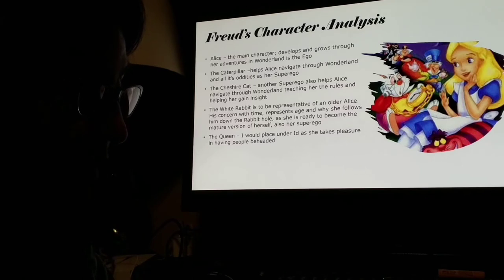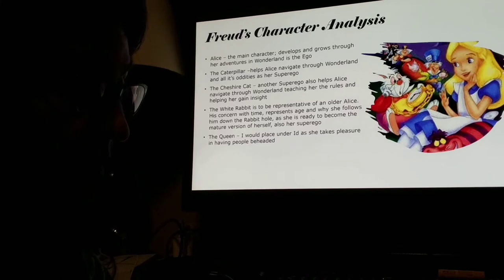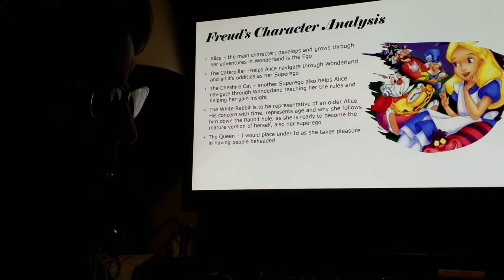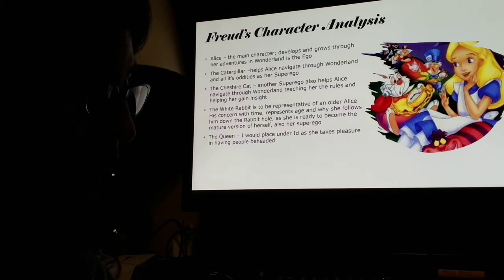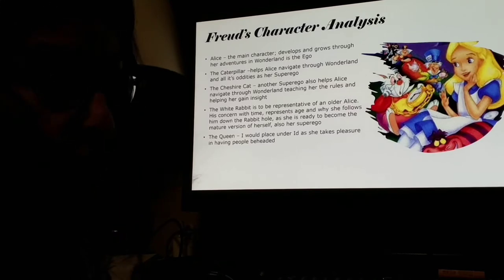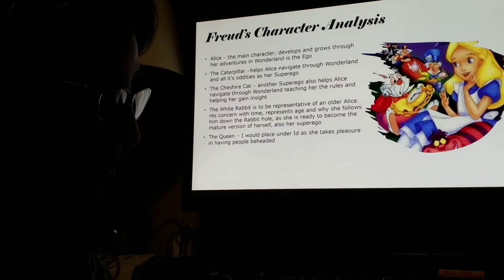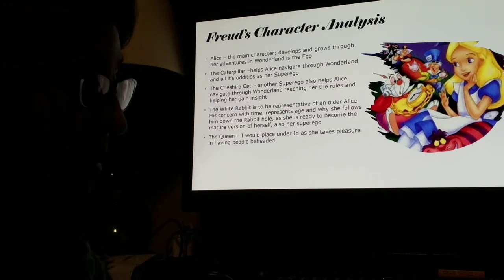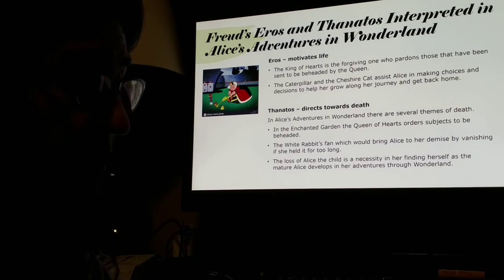For character analysis, Alice's main character, who develops and grows through the adventures in Wonderland, is the ego. The caterpillar helps Alice navigate through Wonderland and all its oddities as her superego, as does the Cheshire Cat, who also helps her navigate Wonderland, teaching her the rules and helping her gain insight. The White Rabbit is representative of an older Alice — his concern with time represents age, and she follows him down the rabbit hole as she is ready to become the mature version of herself.